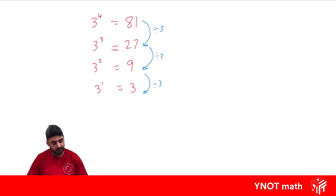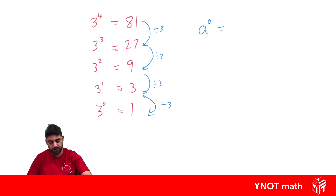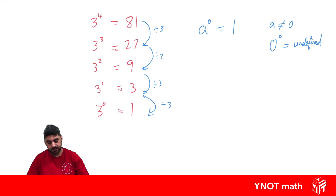Following the same pattern to find 3 to the power of 0: we divide the previous value (3) by 3, giving us 1. So 3 to the power of 0 equals 1, and this is true for any number — any number a to the power of 0 equals 1, except when a = 0, because 0 to the power of 0 is undefined, similar to dividing by 0.